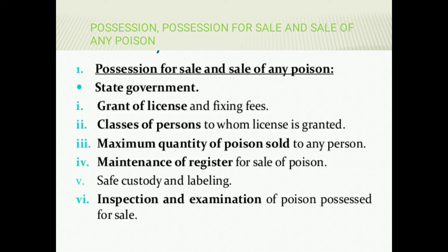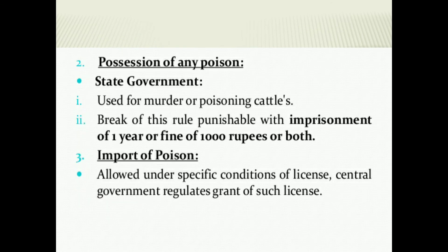Inspection and examination of poison passed for sale — the selling of poison by any vendor, that inspection and examination will be done by state government. If some person uses the poison for murder purpose or possessing of any poison for use for murder purpose, or for poisoning of any animals like cattle, state government punishment will be there. The breach of this rule is punishable with imprisonment of one year or a fine of 1000 rupees or both.